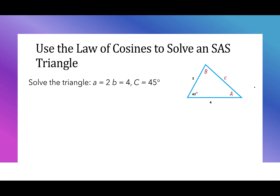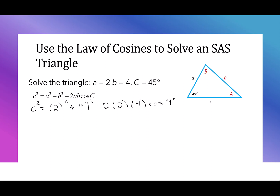In this example, we'll solve a triangle where side a is equal to 2, side b is equal to 4, and angle C is equal to 45 degrees. We'll once again use the equation c squared equals a squared plus b squared minus 2ab cosine of C. That means I have c squared equals 2 squared plus 4 squared minus 2 times 2 times 4 times the cosine of 45 degrees. Putting all of that in my calculator, I have that c squared is about 8.68, and c is 2.947.